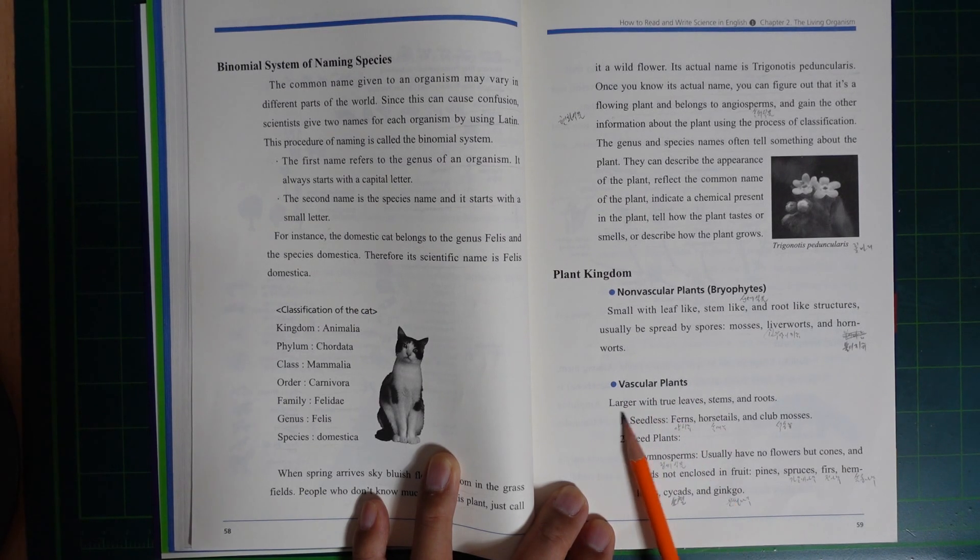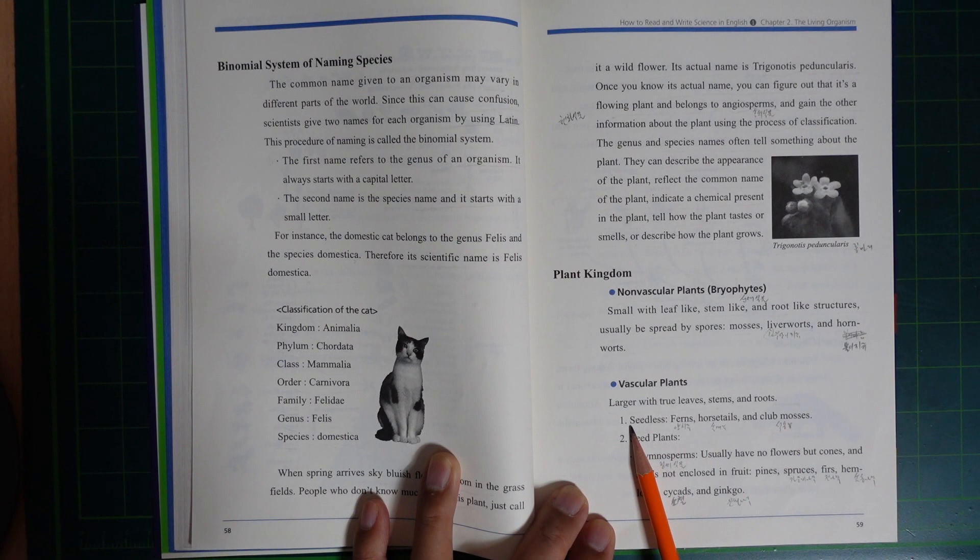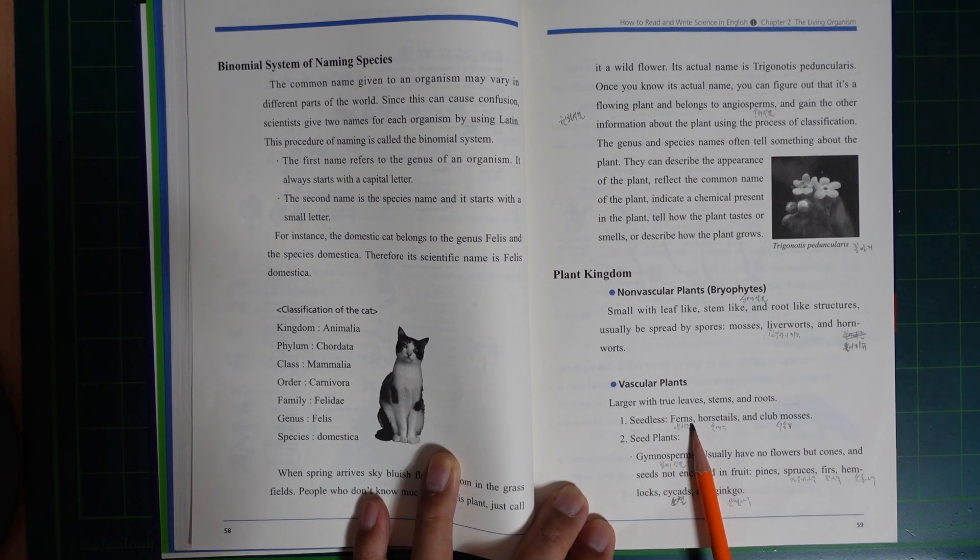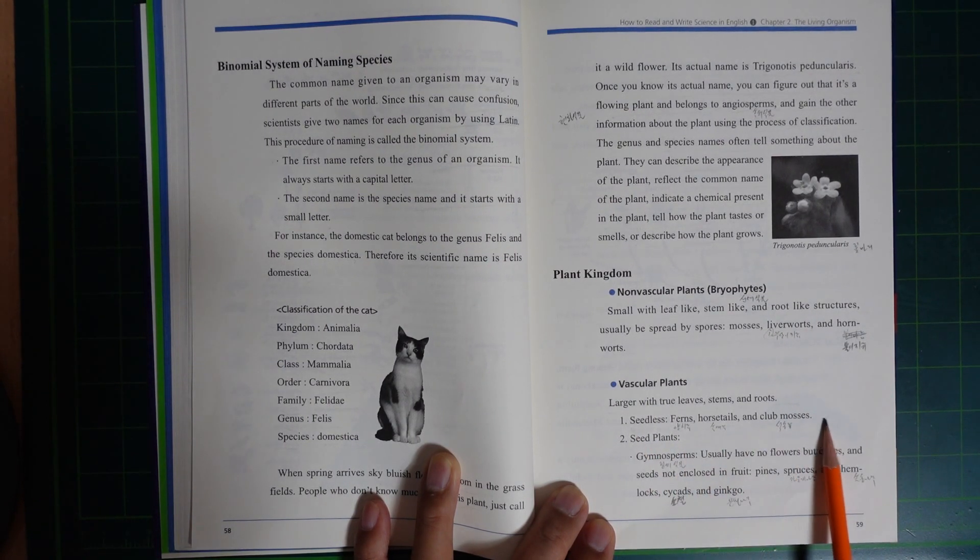Vascular plants have large with true leaves, stems, and roots. Seedless vascular plants include ferns, horsetails, and club mosses.